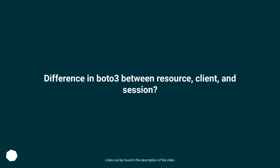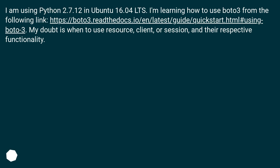What is the difference in Boto3 between Resource, Client, and Session? I am using Python on Ubuntu 16.04 LTS, learning how to use Boto3 from the documentation. My question is when to use Resource, Client, or Session, and their respective functionality.